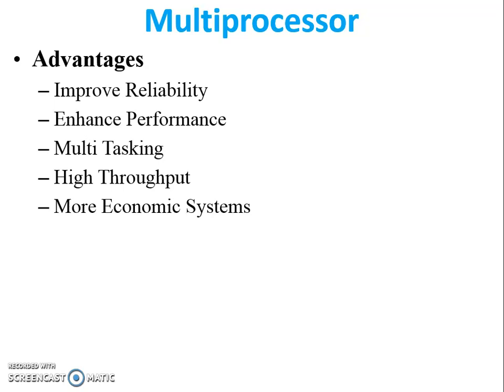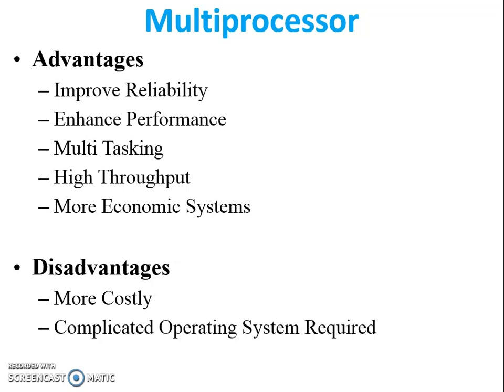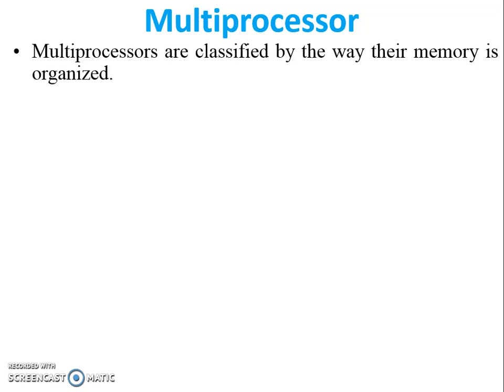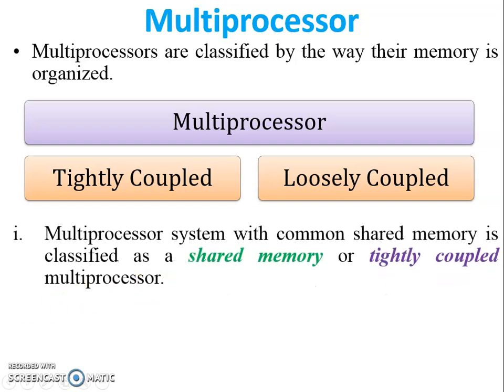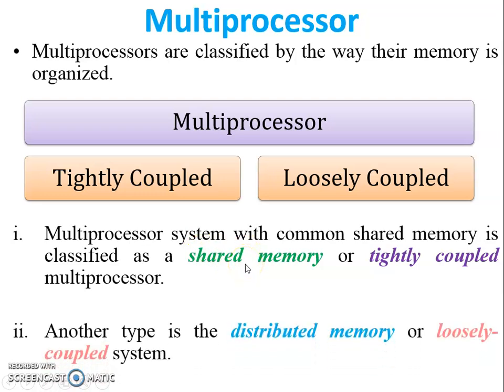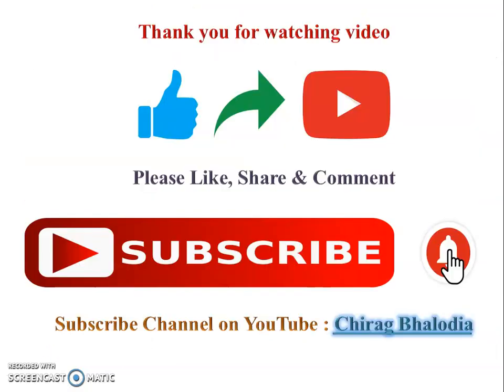Disadvantages: it is more costly compared to a single processor system, a complicated operating system is required because the OS handles dividing tasks into sub-tasks, and a large main memory is required because multiple processors access the memory. Multiprocessors are classified by the way their memory is organized — divided into two parts: tightly coupled (also called shared memory multiprocessor) and loosely coupled (called distributed memory multiprocessor).